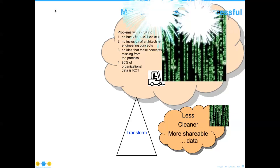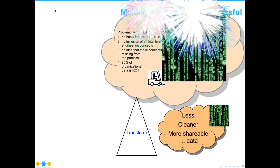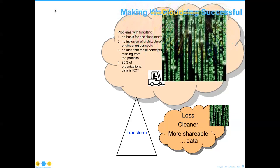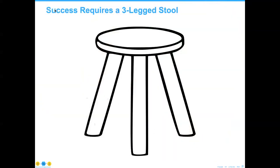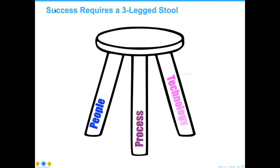As I mentioned before, what we're trying to do here involves a three-legged stool: people, process, and technologies that we need to put in place.